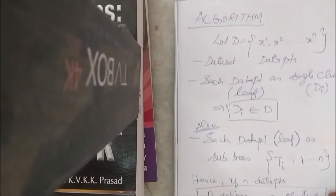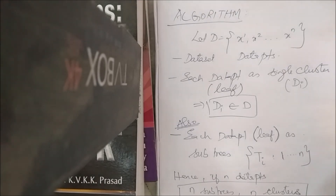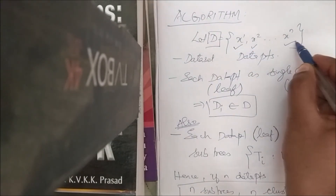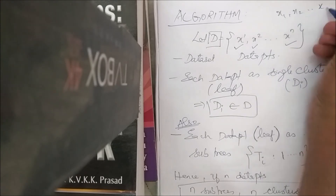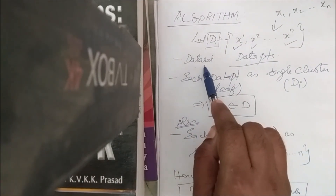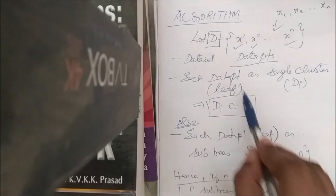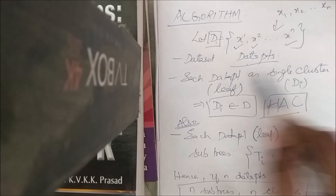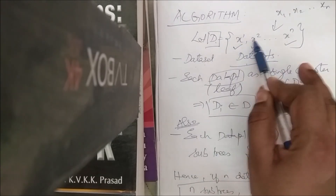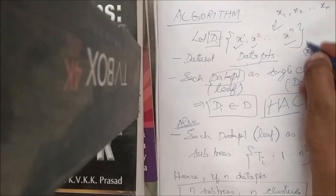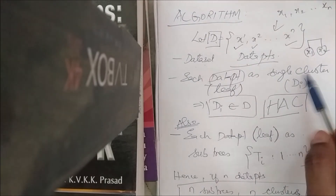Now let's go into the details of how the BHC algorithm works. Assume D is a dataset consisting of points x1, x2, ... xn. This is the starting point. As in hierarchical agglomerative clustering, every data point is initially assumed to be its own cluster. Whichever points are nearest, you start grouping them — that is how we proceed.